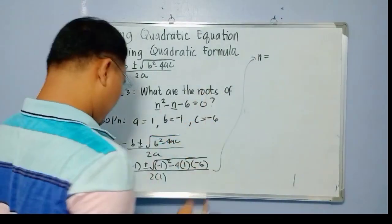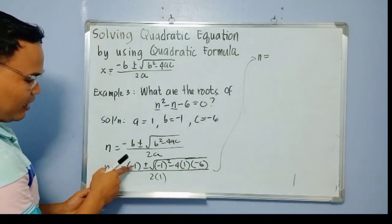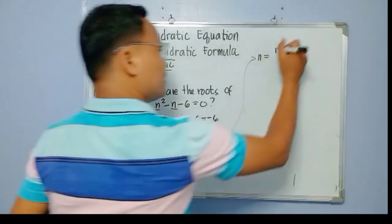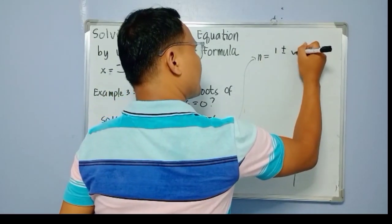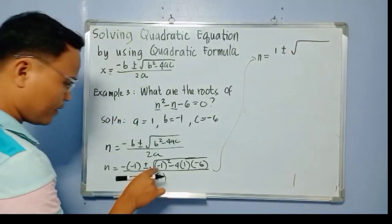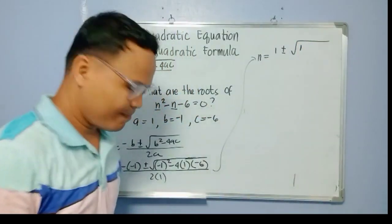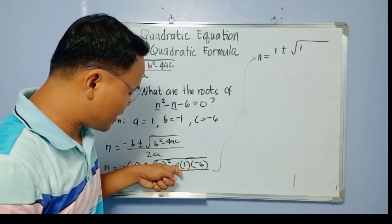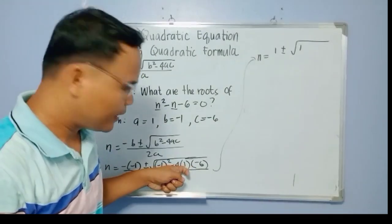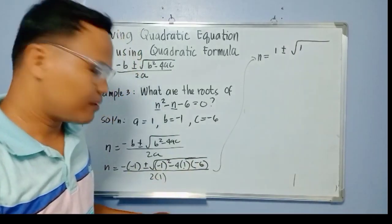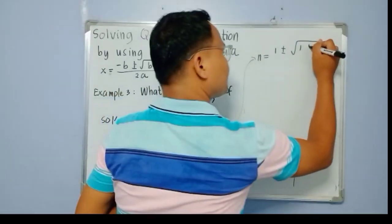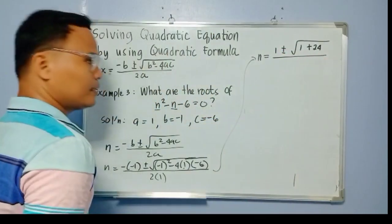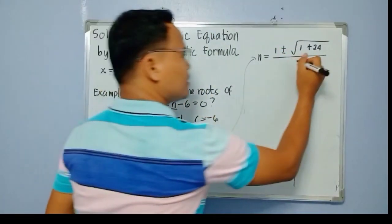Continuing: negative times negative is positive, so we have positive 1. Plus and minus, copy the square root symbol. Negative 1 squared is positive 1, then multiplying: negative 4 times 1 is negative 4, times negative 6 is positive 24. So we have 1 plus 24 inside the square root, all over 2 times 1 which equals 2.